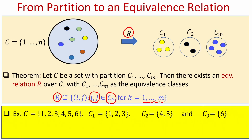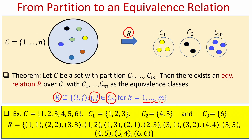To demonstrate, imagine the set C is {1, 2, 3, 4, 5, 6} and a partition of this set is given: the first subset has {1, 2, 3}, the second subset has {4, 5}, and the third subset has {6}. Let me construct a relation R as follows.